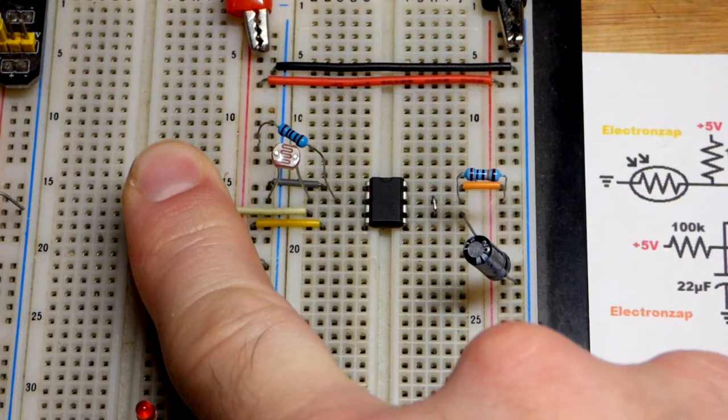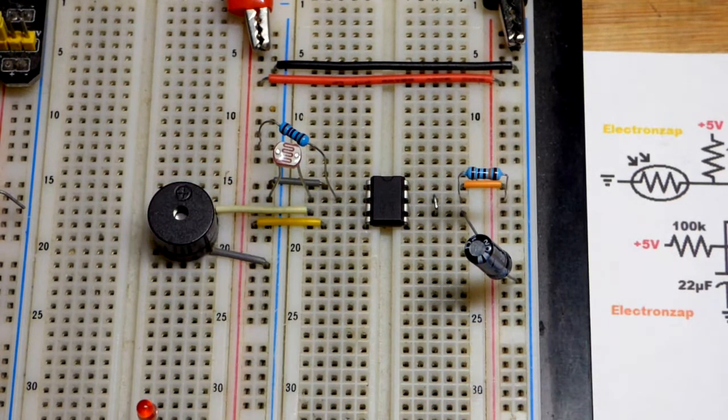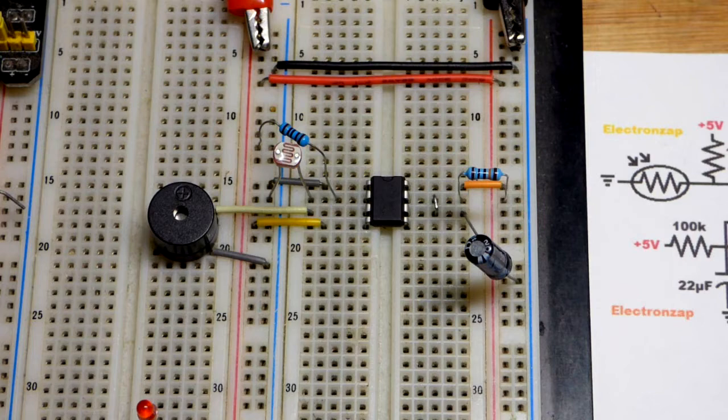The light has to be bright, and if I held the light on the light dependent resistor it would have just stayed buzzing steadily.